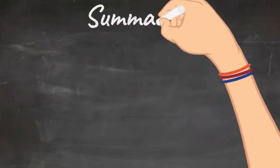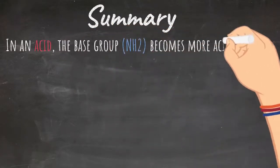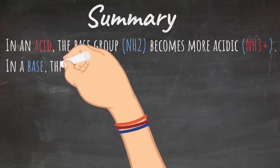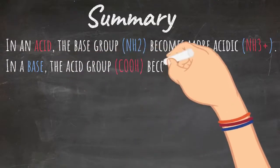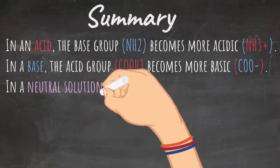Summary. In an acid, the base group, NH2, becomes more acidic, turning to NH3 with a positive sign. In a base, the acid group, COOH, becomes more basic, becoming COO minus.